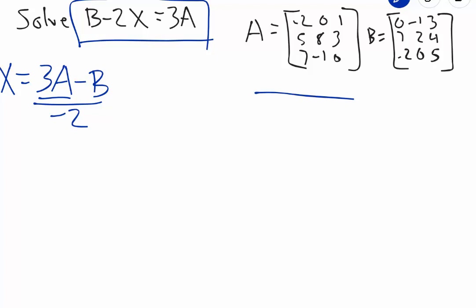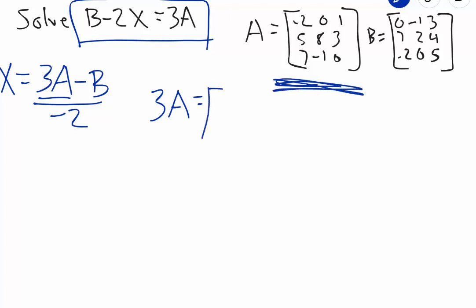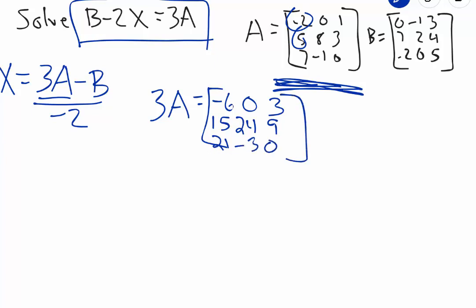Then after we have that, we're going to subtract 3A from B — take 3A minus B. When we're done, we'll divide everything in that matrix by negative 2. So the first thing is to find 3A by multiplying every element of matrix A by 3: 3 times negative 2 gives negative 6, 3 times 0, 3 times 1, then 3 times 5 is 15, 3 times 8, 3 times 3, then 3 times 7, 3 times negative 1, and 3 times 0.